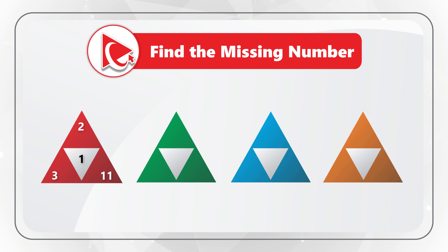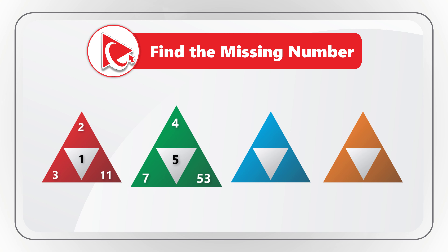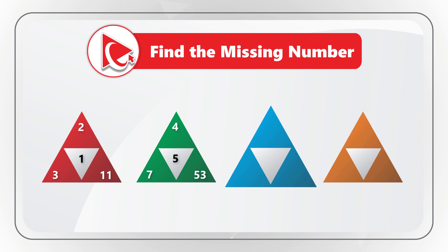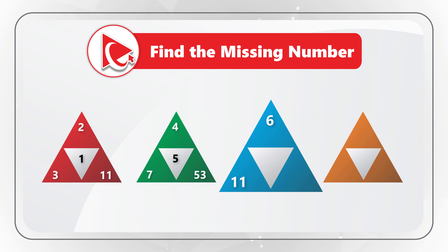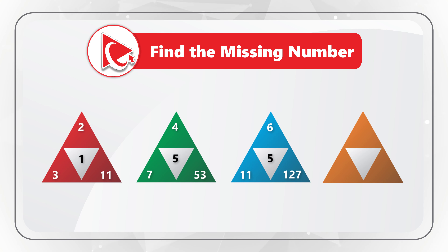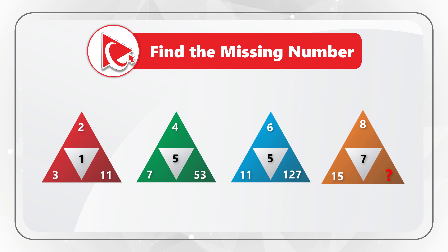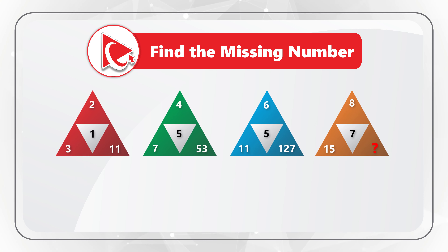The second triangle has numbers 7, 4, 53, and then number 5 in the middle. The third triangle has numbers 11, 6, 127, and number 5 in the middle. Then there is a fourth triangle which has the missing number, but also has numbers 15, 8, and 7.